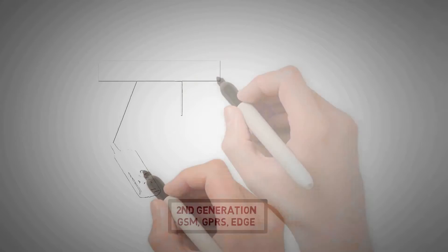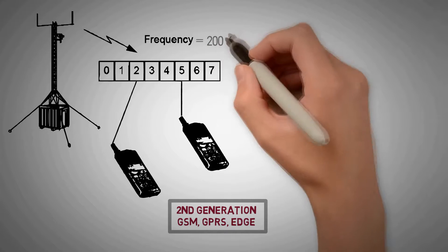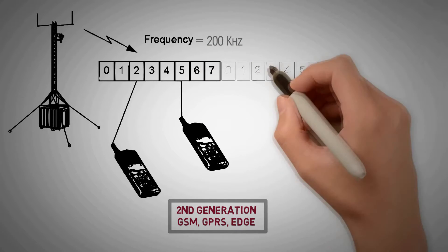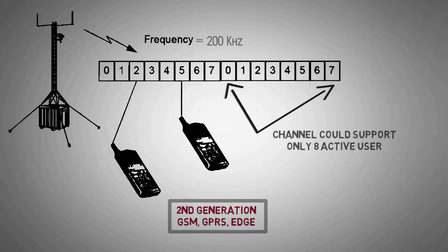This technology was used in the 2G systems like GSM, GPRS and EDGE. Each user was provided one of 8 TDMA slots and a bandwidth of 200 kHz. Dynamic resource allocation meant more users could be supported but each channel could support only 8 active users at a time.